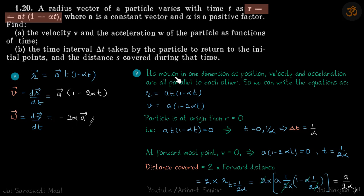Now because its motion is one dimension - why? Because you can see all three are parallel to a vector. So it's a motion in one dimension as position, velocity and acceleration are all parallel to each other. So we can write the equations as r equals at(1 minus alpha t) and v equals a(1 minus 2 alpha t). Because it's one dimensional motion, let's remove the vector terms from everywhere. Just write the magnitudes.